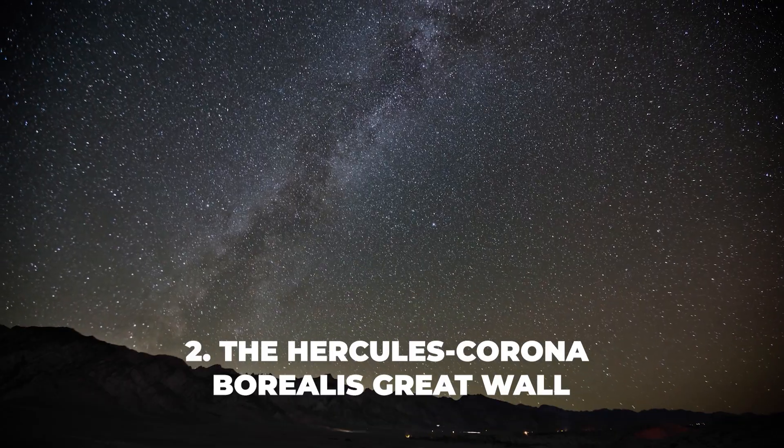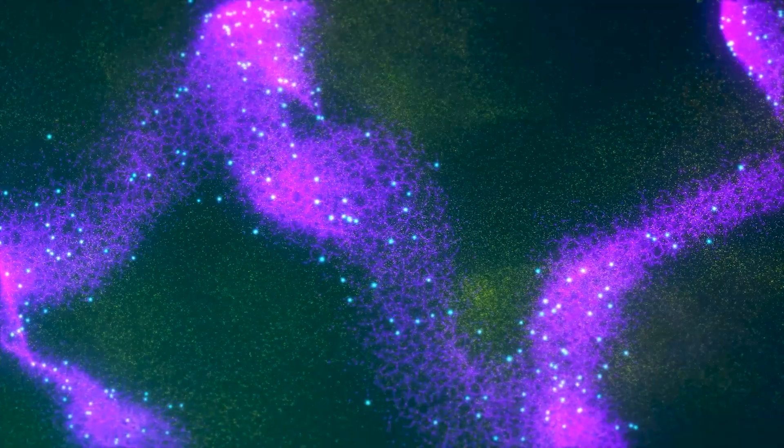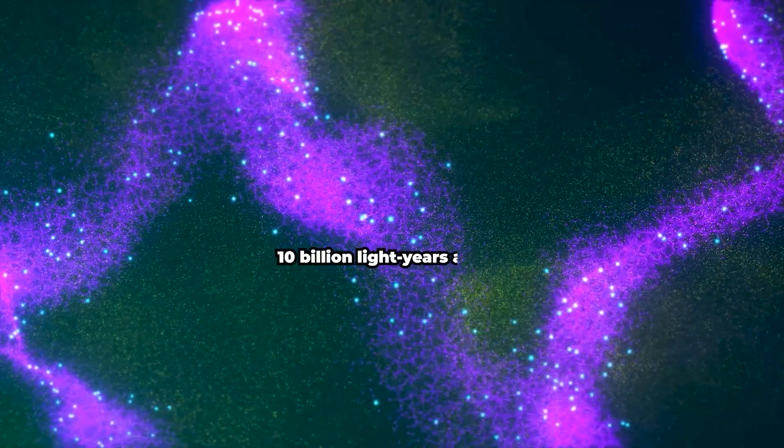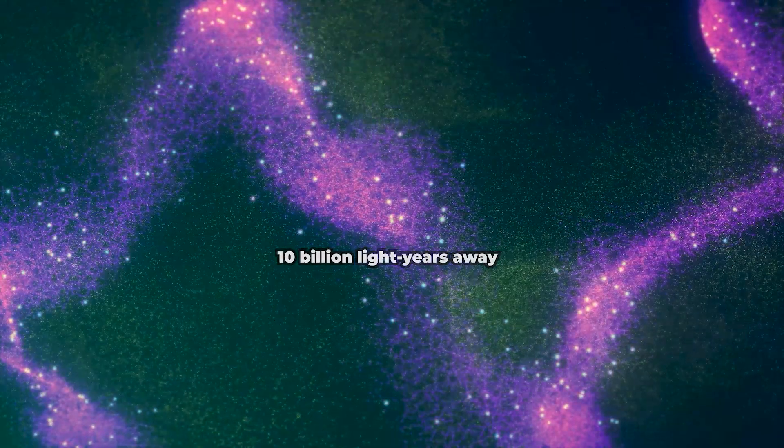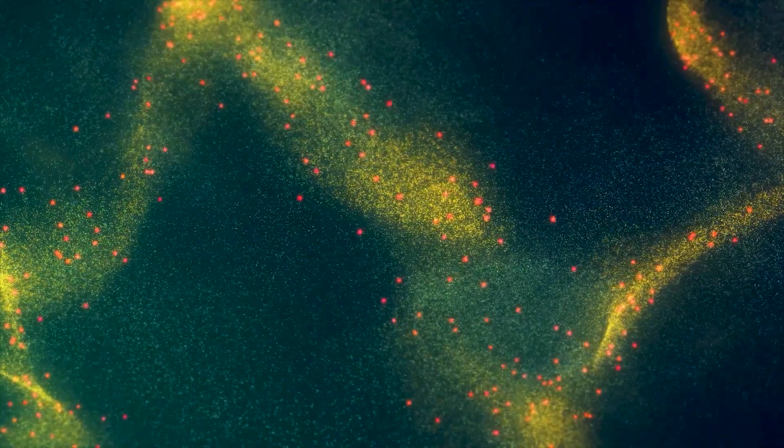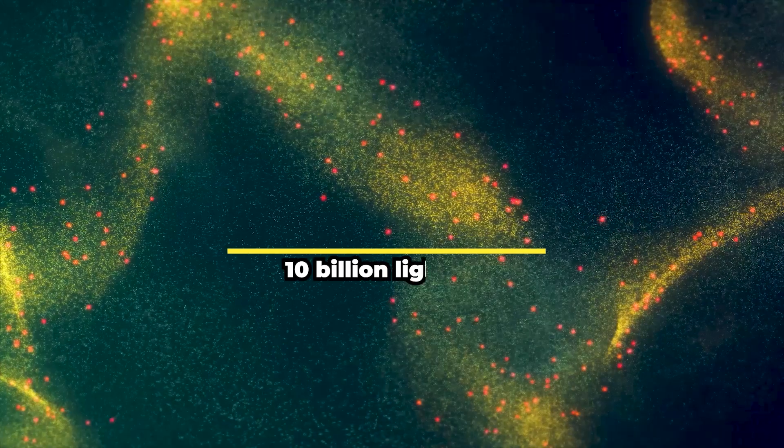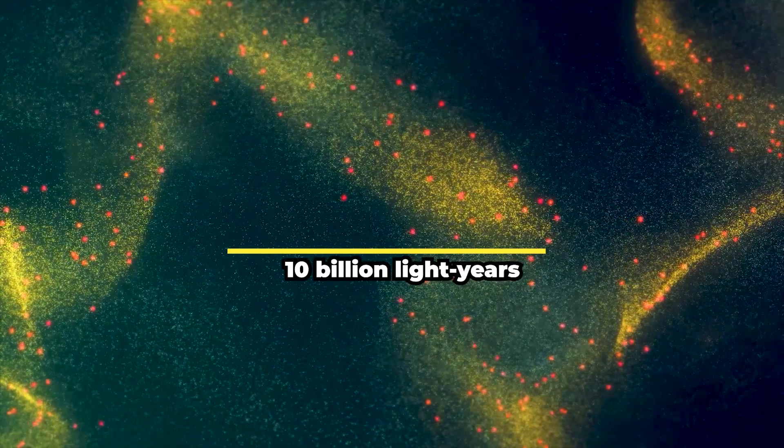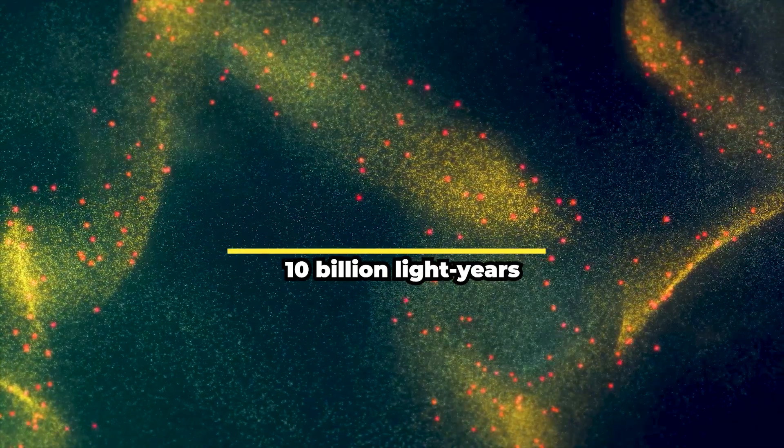Get ready for number 2 on our list, the Hercules Corona Borealis Great Wall. This colossal structure, about 10 billion light-years away from us, is a vast cosmic web of galaxies, galaxy clusters, and dark matter that stretches across 10 billion light-years, making it one of the most extensive structures known to exist.